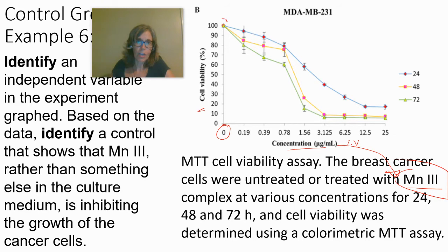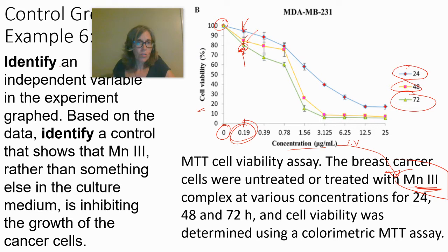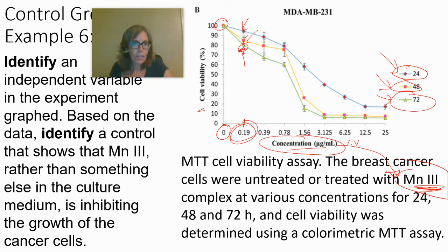At zero MN3, you see 100% viability. At 0.19 micrograms per mL, there are three test tubes — cells exposed to that concentration for 24 hours, 48 hours, and 72 hours respectively. For the independent variable, you could say either the different concentrations of MN3 or the different time periods of exposure — either is acceptable.